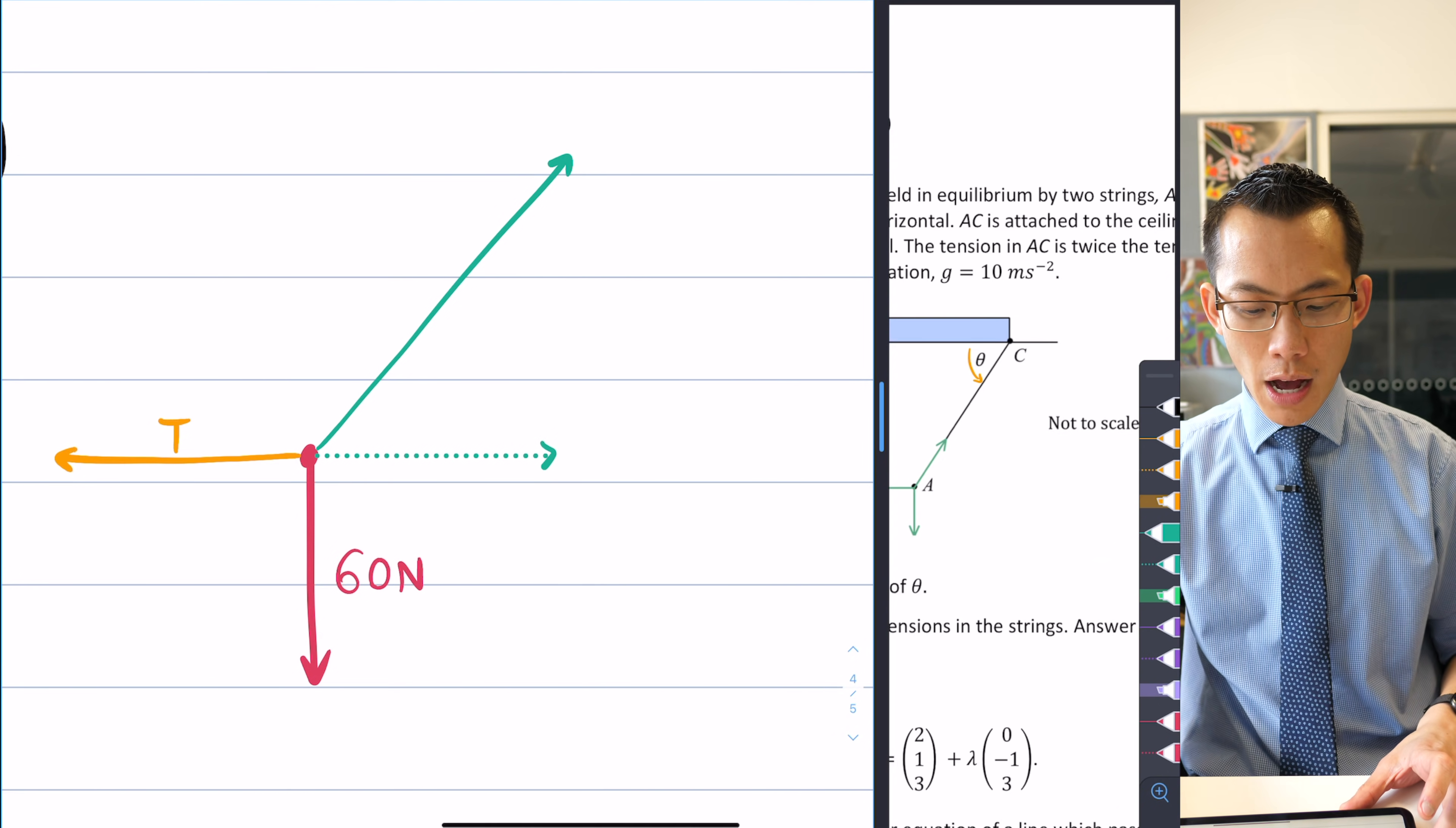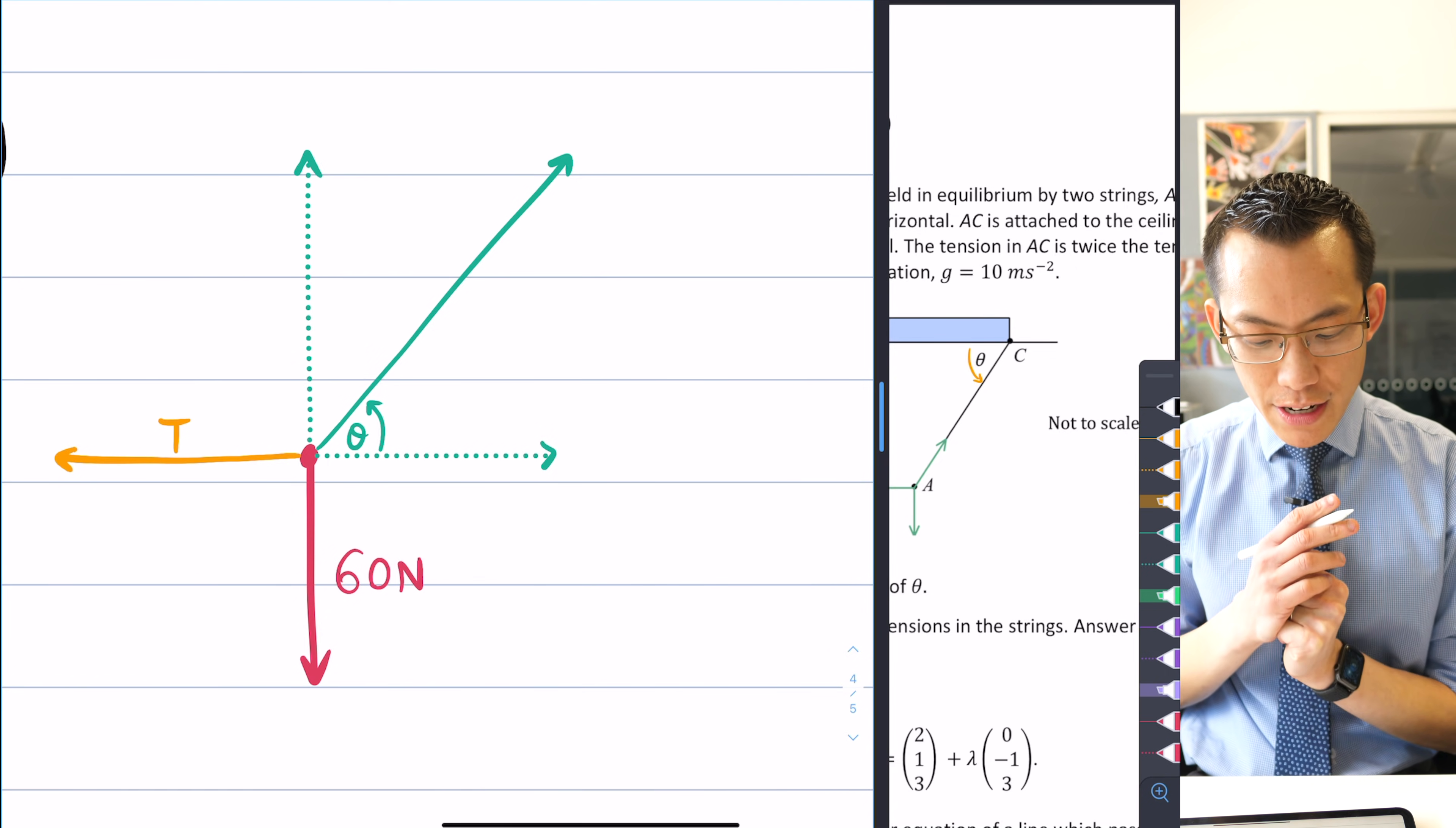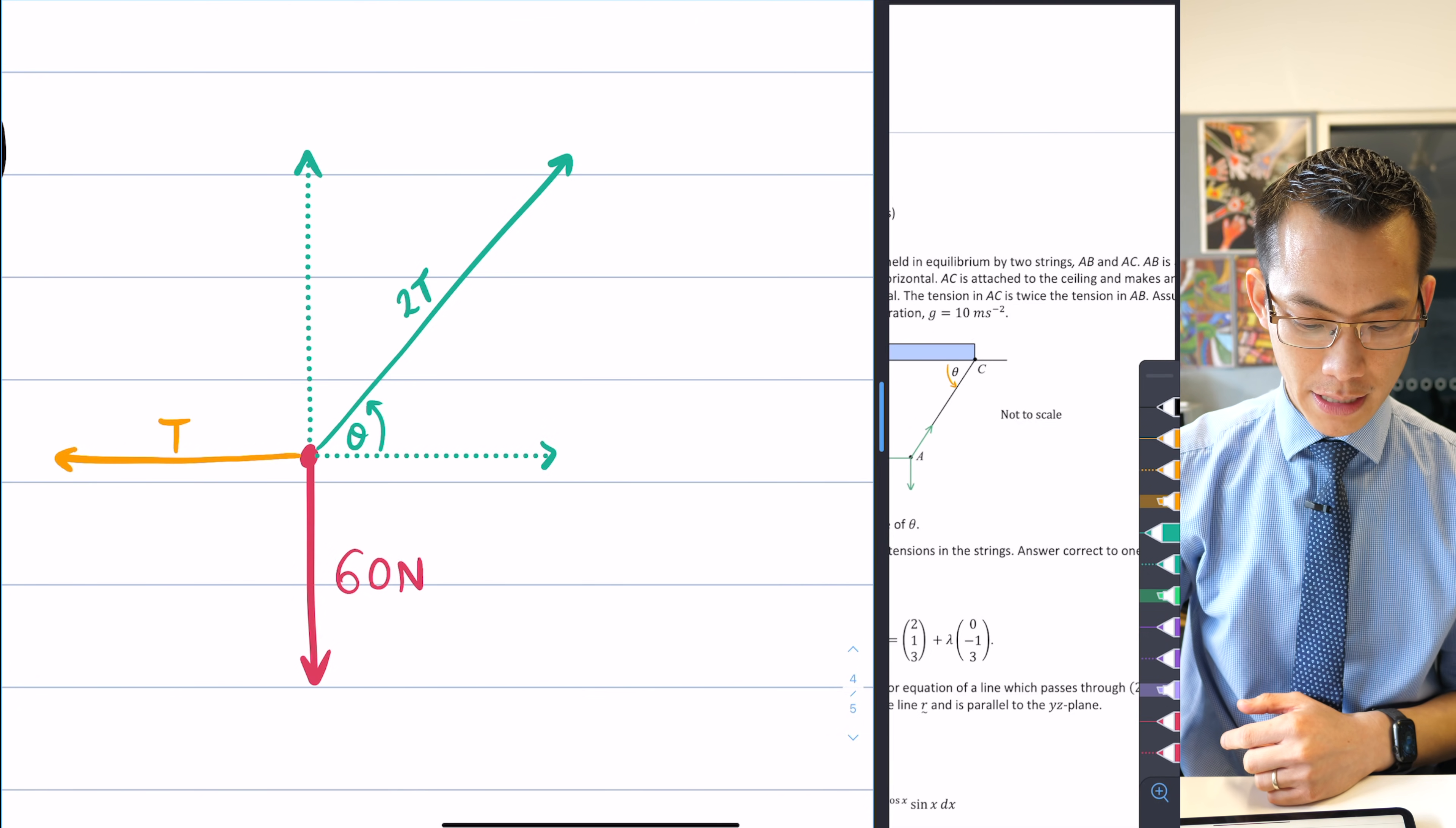If I were to try and resolve this into two components, I have this horizontal component here, and then I also have this corresponding vertical part. What I do know is that this whole rope going to the ceiling has twice the tension than the horizontal one. The tension in AC is twice the tension in AB, so if I call this T, that means that this diagonal is 2T.